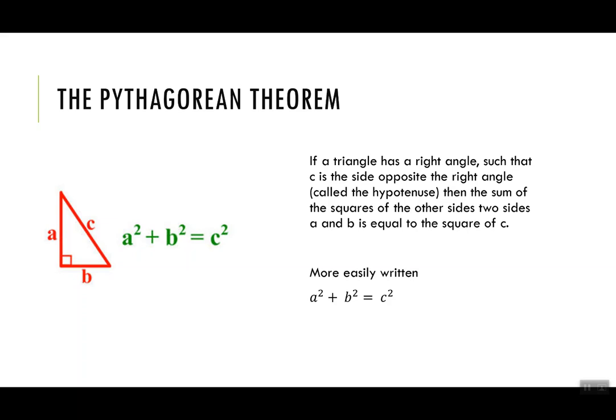More easily, I can see A squared plus B squared is equal to C squared. It's really important that C is written by itself on one side of the equation and that the other two sides, which are the base and the height, are on the opposite side.